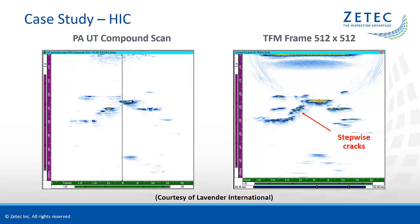This slide shows the UT images of the damage inside the specimen. On the left side, we see the image from a compound scan technique using L waves ranging from minus 15 to 15 degrees and an aperture of 32 elements. On the right side, we see a TFM frame with 512 by 512 pixels covering the same volume of the specimen. The damage in this specimen is so extensive that standard phased array has no difficulty detecting.